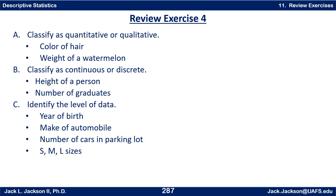Review exercise 4. A — classify as quantitative or qualitative: the color of hair; the weight of a watermelon. B — classify as continuous or discrete: height of a person; number of graduates. C — identify the level of data: year of birth; make of automobile; number of cars in parking lot; small, medium, and large sizes. Press pause.